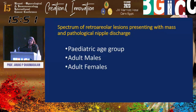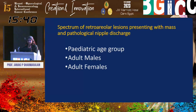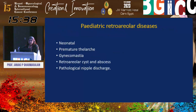The most common features of retroareolar lesions are either the patient presents with a mass or pathological nipple discharge. We'll see how it affects different age groups, as this is the simplest classification. In pediatric retroareolar diseases, it occurs during neonatal period, premature thelarche, gynecomastia, and can present as a retroareolar cyst and abscess, or as pathological nipple discharge.